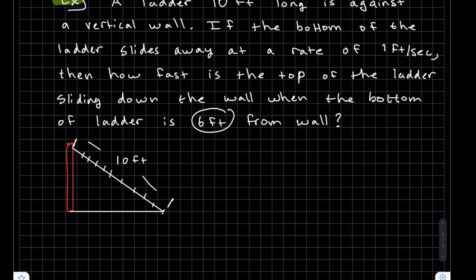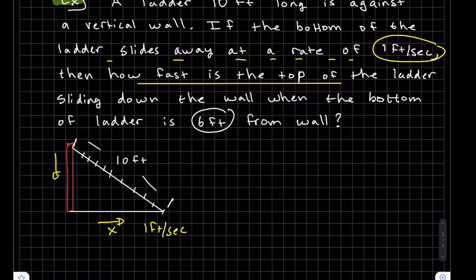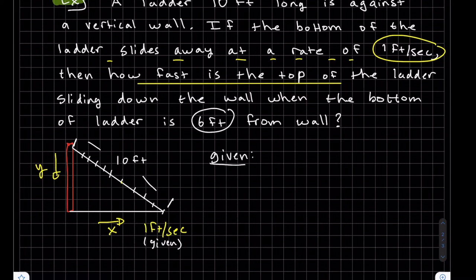The base is sliding outward and the top is going down. We call the base distance x — that's sliding. The problem says the ladder slides away at a rate of 1 foot per second, and we want to know how fast the top of the ladder is sliding down. We call the height y. The given rate is: the bottom of the ladder slides away at 1 foot per second, so dx/dt equals 1.